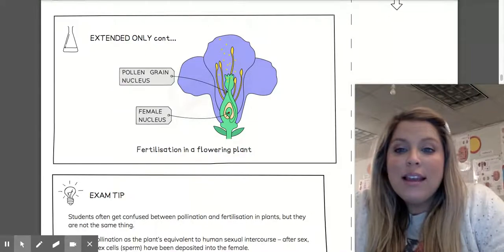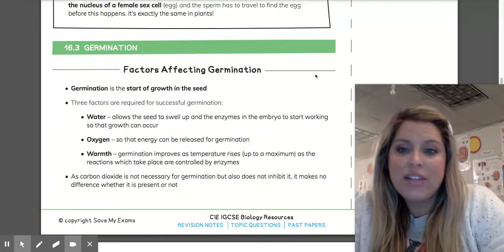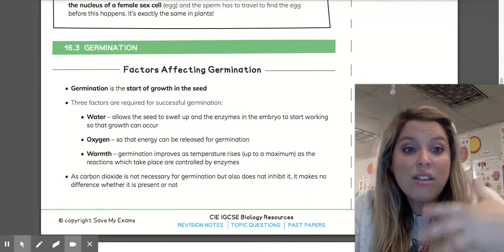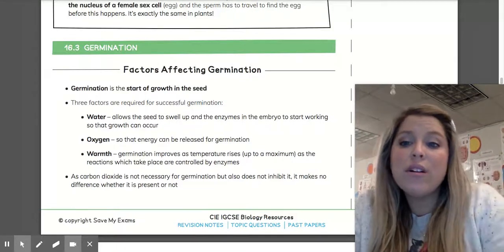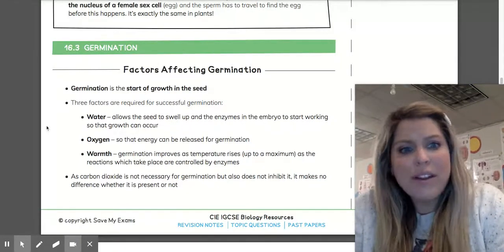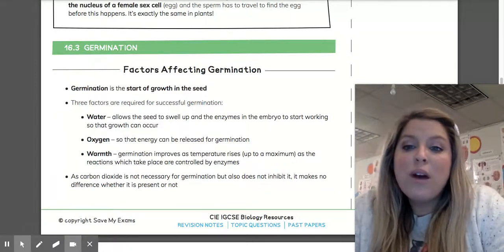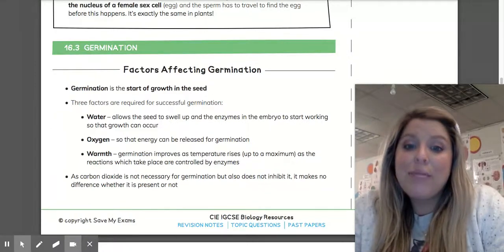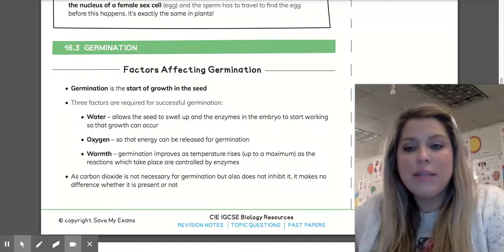And then we can move on to the factors that affect germination. Germination is the start of the growth of that seed. Once pollen meets ovary and the zygote is formed, germination is that result. Three factors affect it: water, oxygen, and warmth. Water allows the seed to swell up and the enzymes in the embryo to start working so that growth can occur. Water is very important to plants, as well as oxygen so that energy can be released for germination.